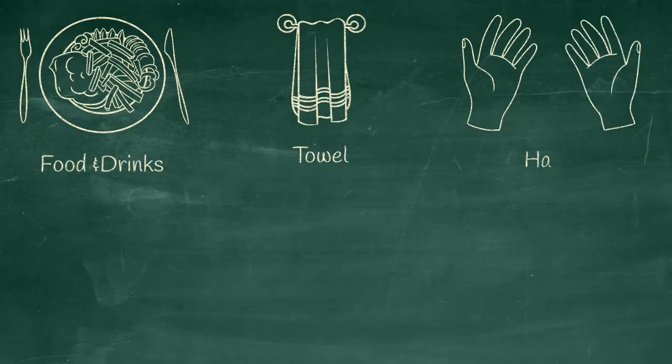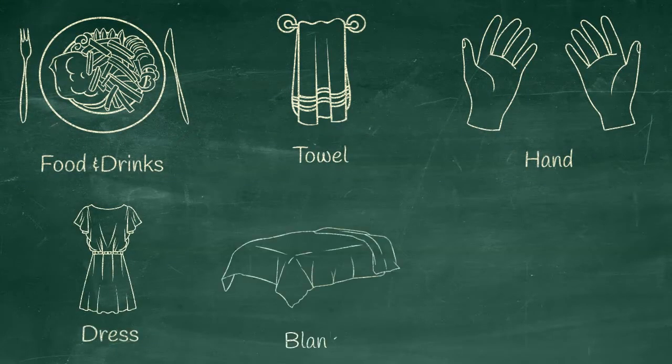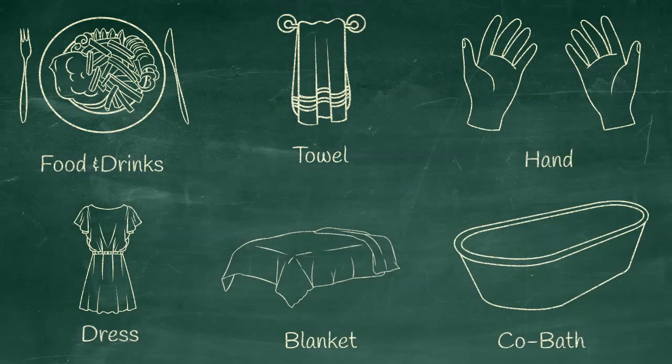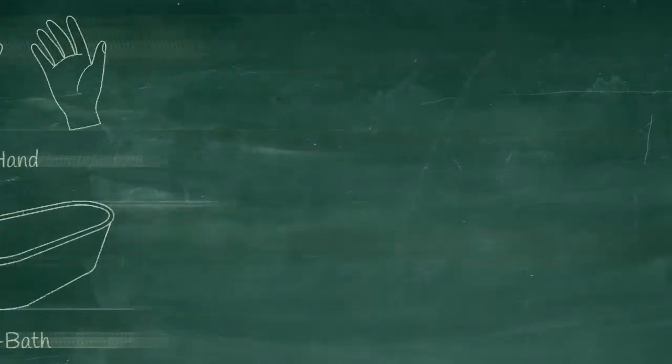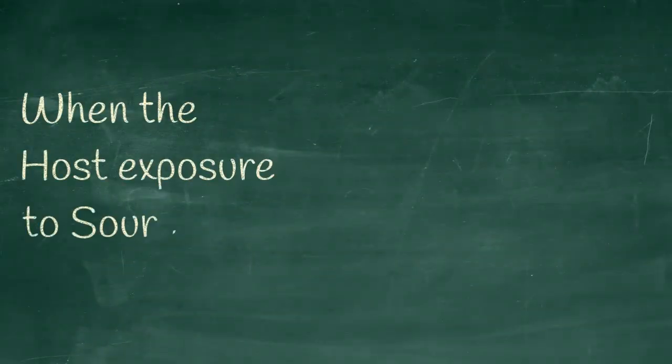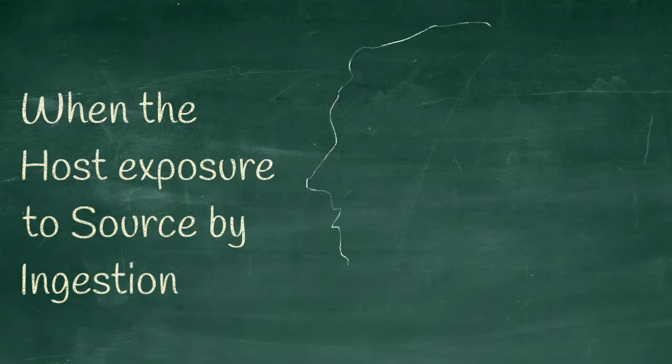Some of the source of infection materials are contaminated food and drinks, towel, hand, dress, blankets and co-bath. The life cycle begins when the host exposed to the source of infections.